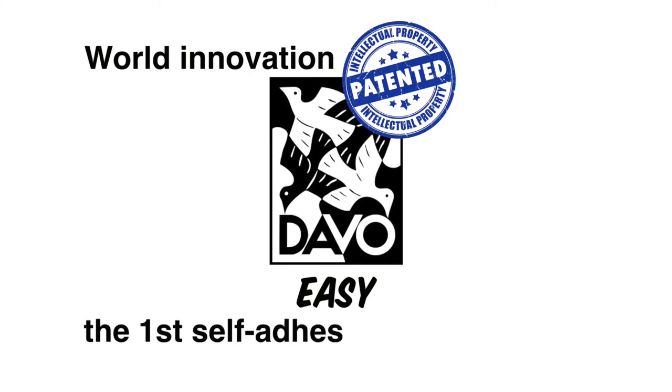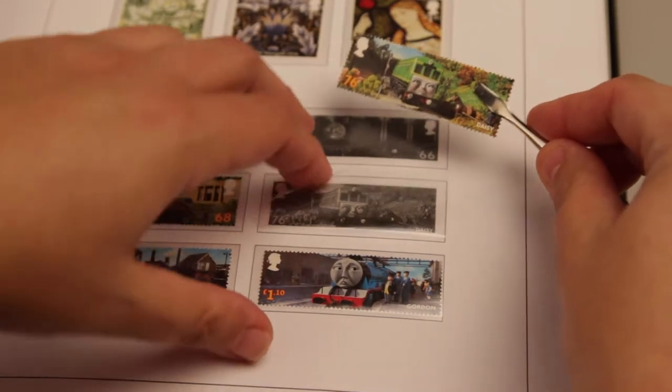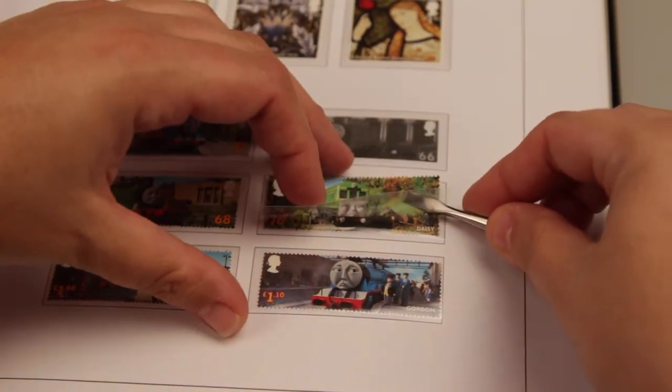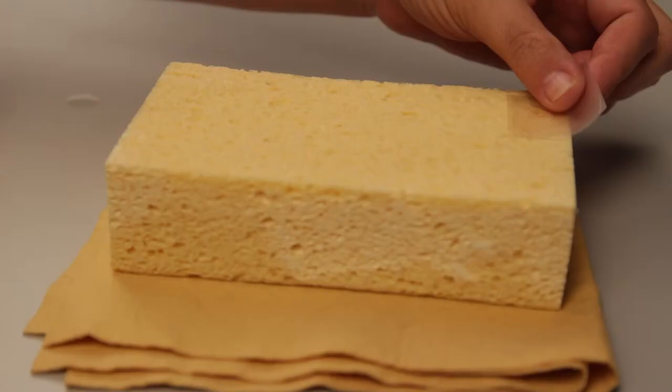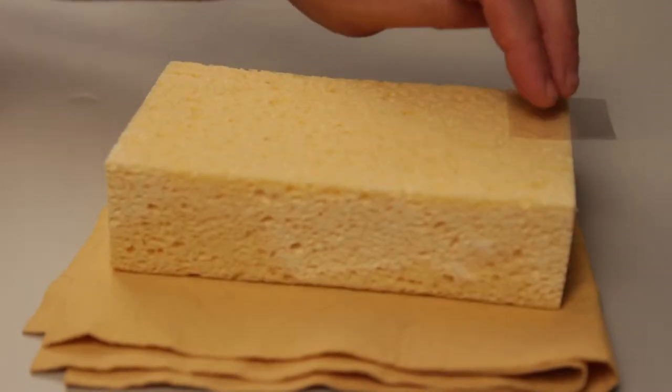Stamp mounts provide by far the best protection for your stamps and are an indispensable item for philatelists. Traditional mounts are affixed into stamp albums by slightly moistening them, but the process isn't always as simple as it seems.